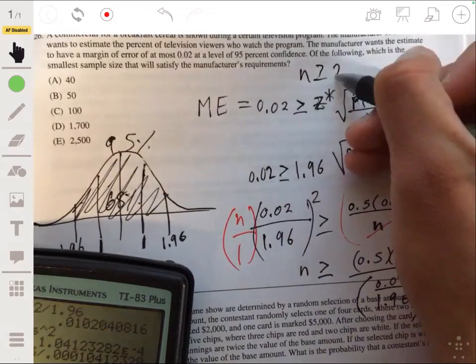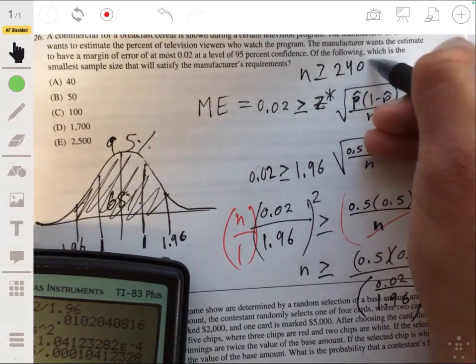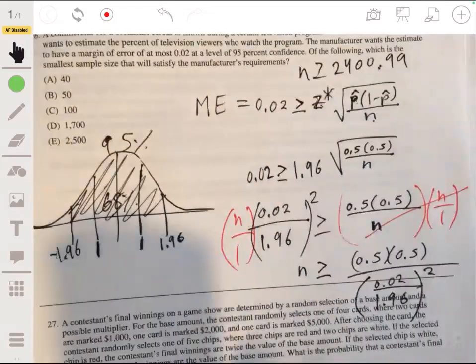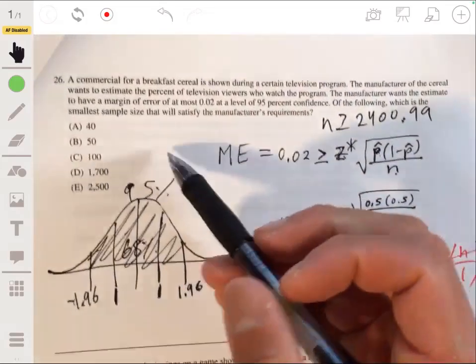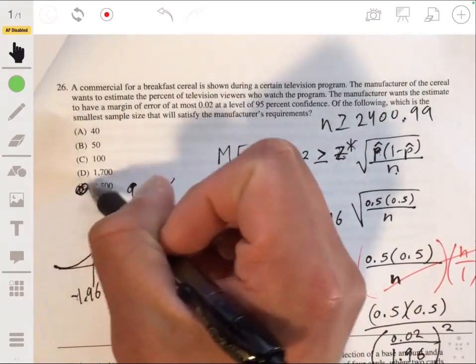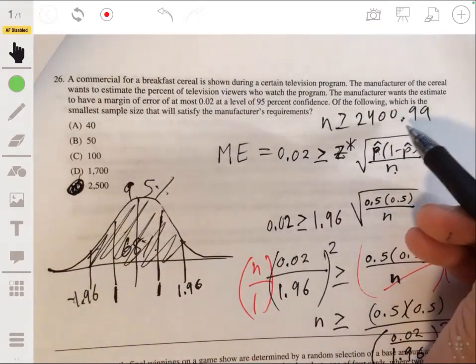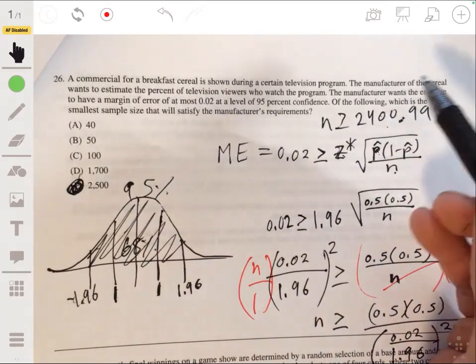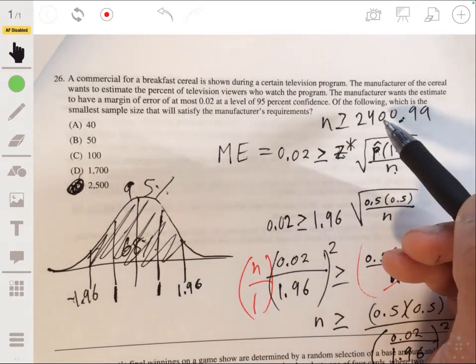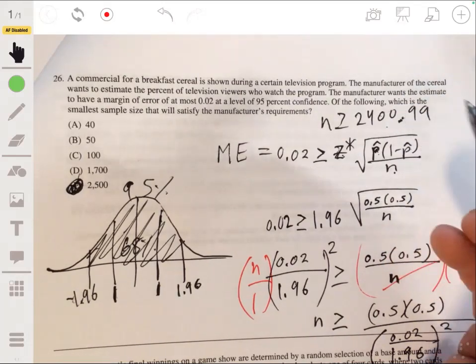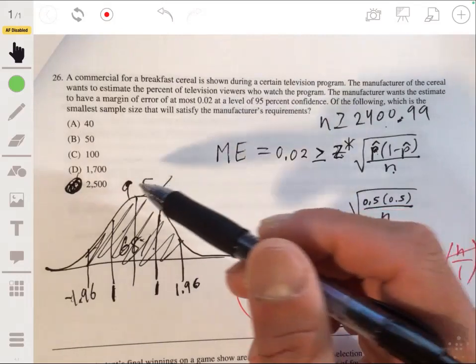So n has to be at least 2400.99 to 2401. And again, you don't pick necessarily the closest value. But in this case, it still is the closest value. But you want to pick the closest value that's above the sample size to be conservative. So in other words, you wouldn't go to 2400. You would go to 2401 or anything above this. So this would work.